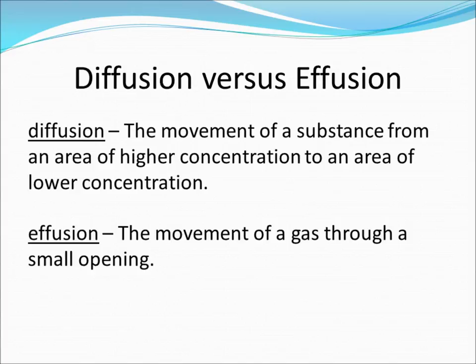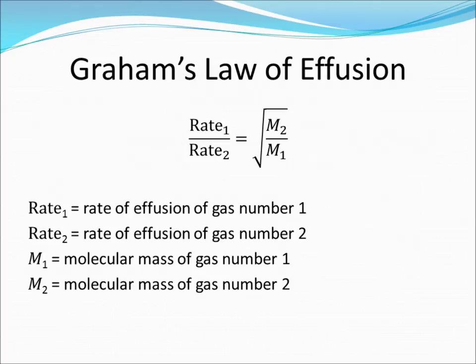As you learned in chapter 6, Graham's law of effusion is given by the equation shown on the screen now, where rate 1 is the rate of effusion of gas number 1, rate 2 is the rate of effusion of gas number 2, M1 is the molecular mass of gas number 1, and M2 is the molecular mass of gas number 2. Note that lighter gases will effuse faster than heavier gases, thus explaining why helium-filled balloons deflate much faster than air-filled balloons.